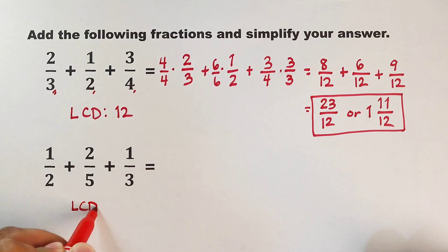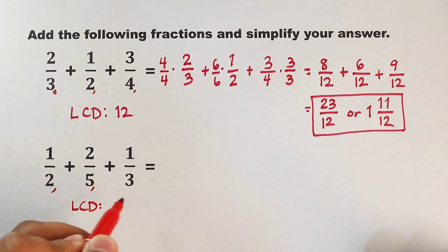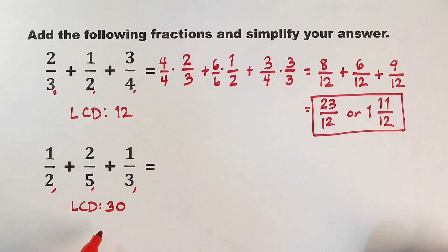So what is the LCD now between 2, 5, and 3? Let's see. So what is your answer? The correct answer, or the LCD, is 30.